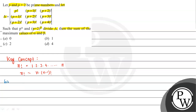We have the determinant delta equal to: first row p factorial, p plus 1 factorial, p plus 2 factorial; second row p plus 1 factorial, p plus 2 factorial, p plus 3 factorial; third row p plus 2 factorial, p plus 3 factorial, p plus 4 factorial.